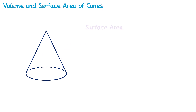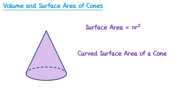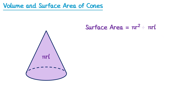Now we're ready to look at the formula for surface area. The surface area of a cone is made up of two faces: the circular face on the bottom, whose area is pi r squared, and the curved surface area, whose formula is pi r L, where L is the slant height. So the total surface area is pi r squared plus pi r L — the area of the circular base plus the curved surface area.